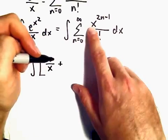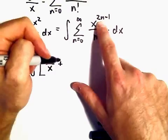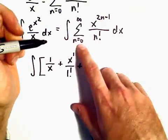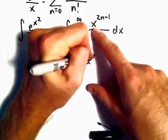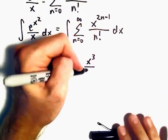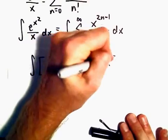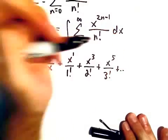When we plug in n=1, we'll get x^1 over 1 factorial. When we plug in n=2, we'll get x³ over 2 factorial. And then x^5 over 3 factorial, etc.